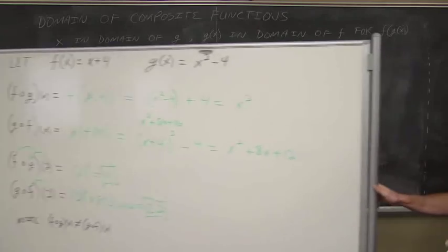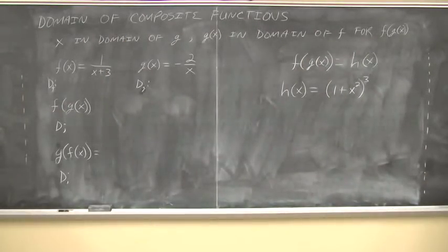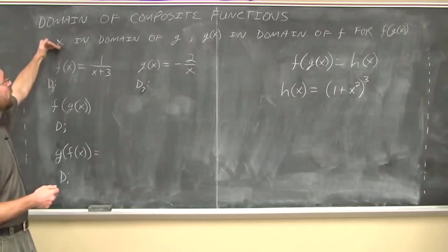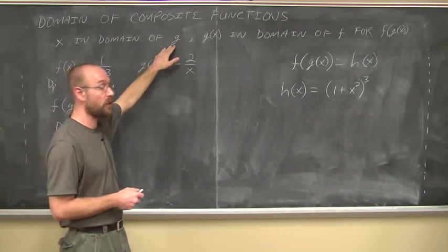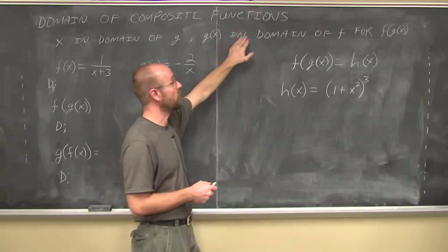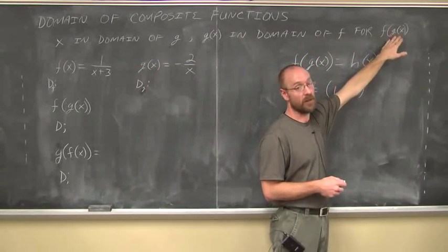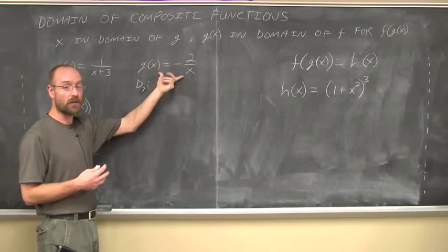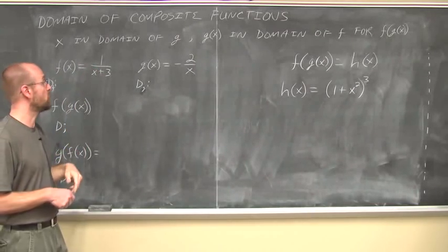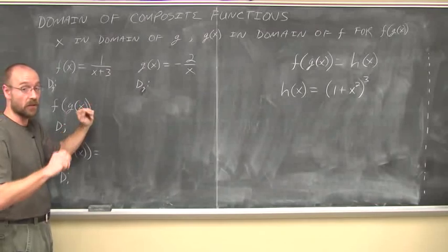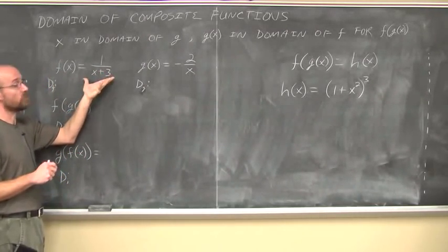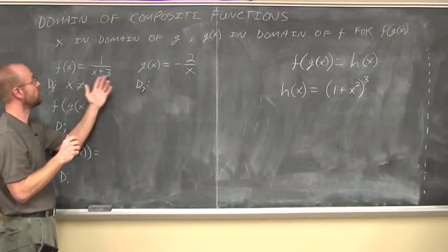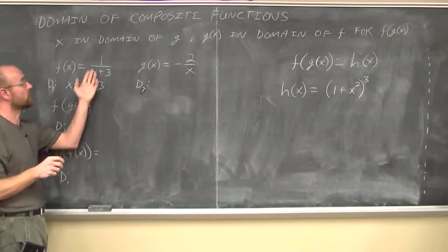Let's move on to determining the domains of composite functions. When it comes to composite functions, we want to determine the domain. If X is in the domain of G and we compose G(X) into F, then G(X) must be in the domain of F for all values of F(G(X)). Essentially, composing a function can change the domain — we're looking for an intersection. Looking at F(X) = 1/(X + 3): X cannot equal −3, since that makes it undefined. For G(X) = −2/X: X cannot equal 0.